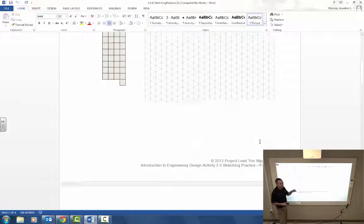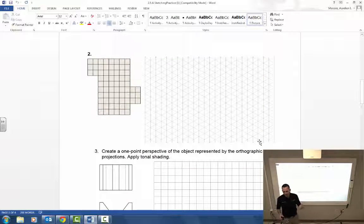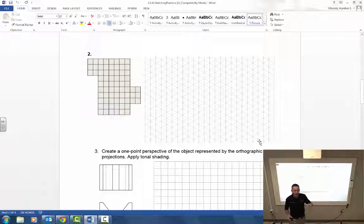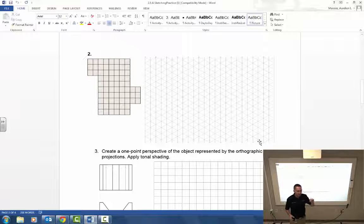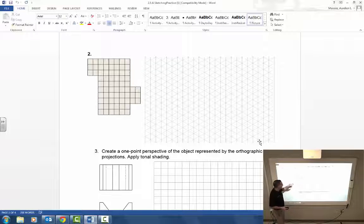If I were to cut this out and fold it in a certain way, what would that object look like? Draw that as an isometric. Any time we do isometrics or pictorials, make sure that you're adding the tonal shading on those drawings.